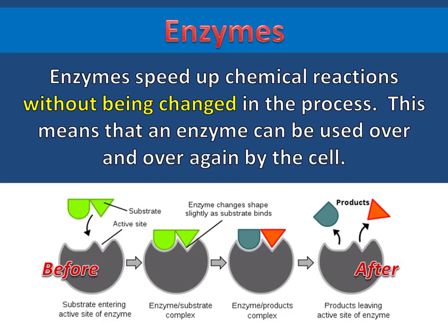Enzymes speed up chemical reactions without being changed in the process, which means that an enzyme can be used over and over again by the cell. In the diagram you can see that the enzyme before the reaction and the enzyme after the reaction looks exactly the same. The enzyme is not permanently changed by the process.